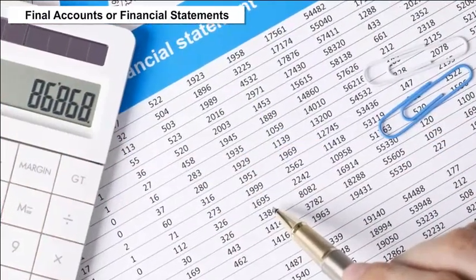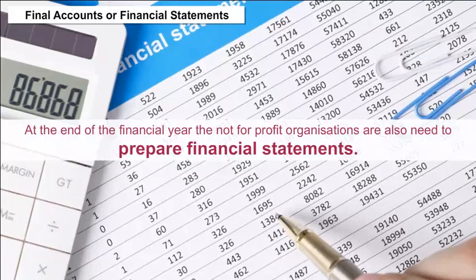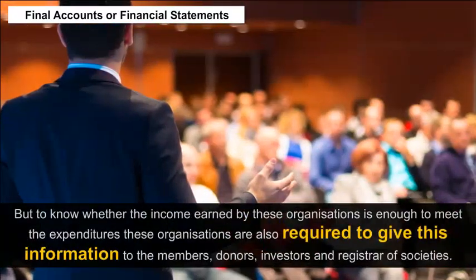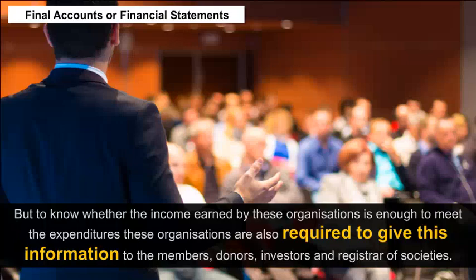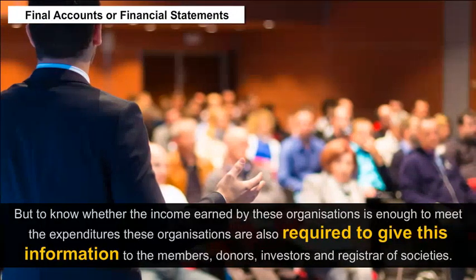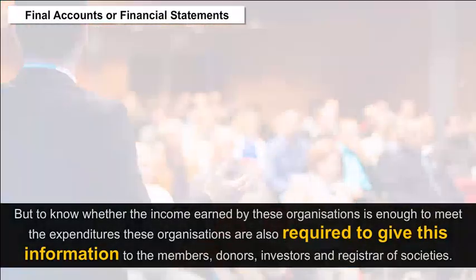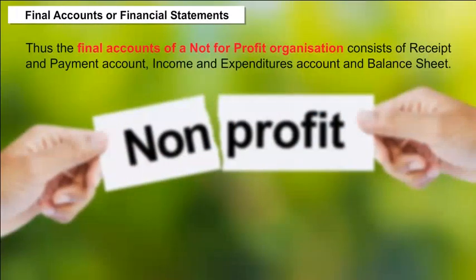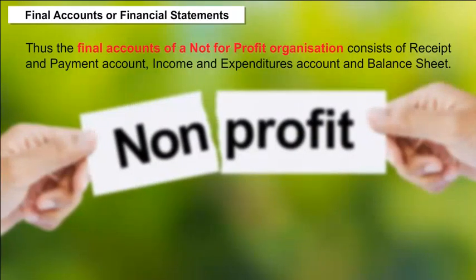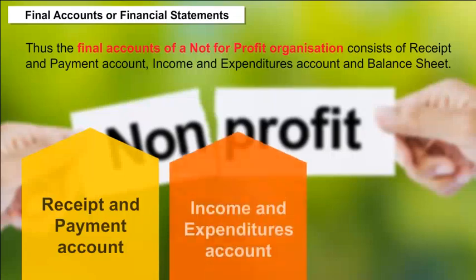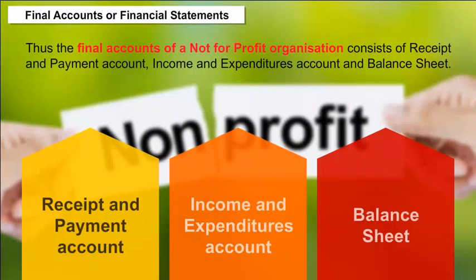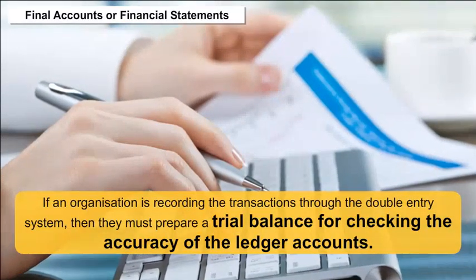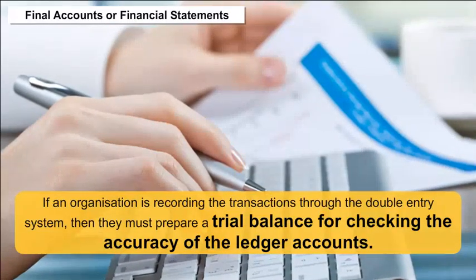Final accounts and financial statements. At the end of the financial year, not-for-profit organizations also need to prepare financial statements to know whether the income earned is enough to meet expenditures. They are also required to give this information to members, donors, investors, and the registrar of societies. The final accounts of a not-for-profit organization consist of a receipt and payment account, an income and expenditure account, and a balance sheet. If recording transactions through the double entry system, they must also prepare a trial balance for checking the accuracy of ledger accounts.